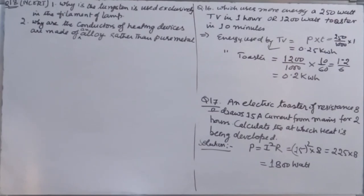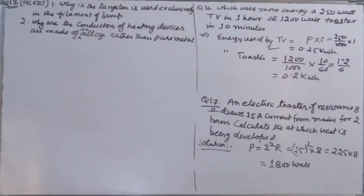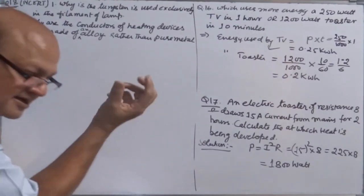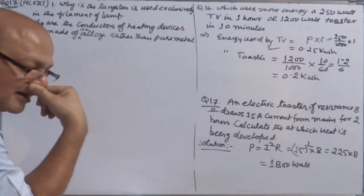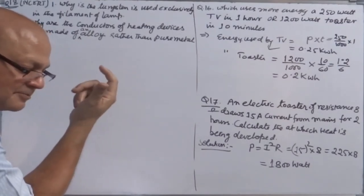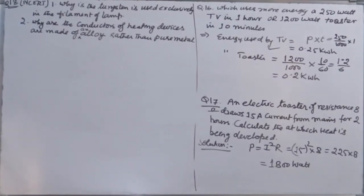Exercise number 18 — conceptual questions. Why is tungsten used exclusively in the filament of a lamp? Because the filament glows for a long time and a large amount of heat energy is generated. The material must resist heat, which depends on melting point. Tungsten is used because it has very high resistivity and a very high melting point.